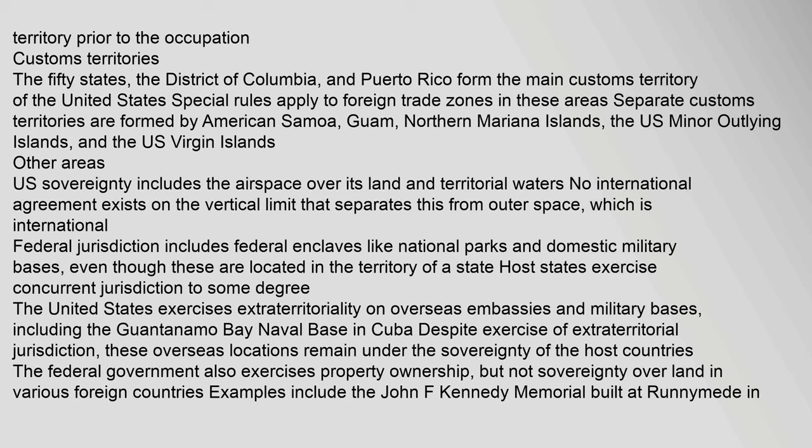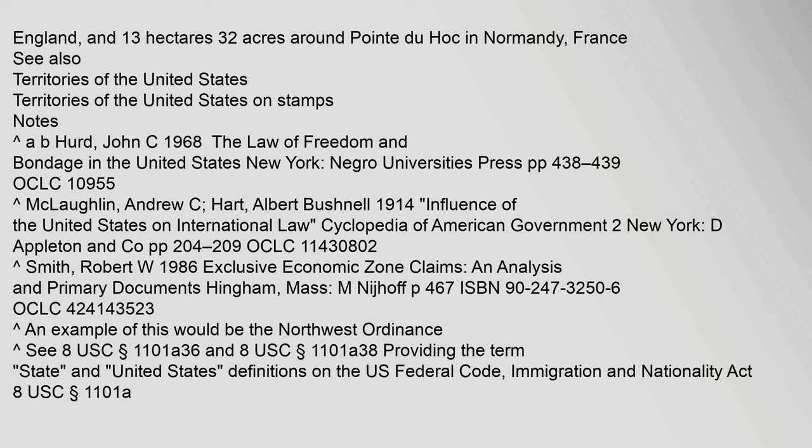U.S. sovereignty includes the airspace over its land and territorial waters. No international agreement exists on the vertical limit that separates this from outer space, which is international. Federal jurisdiction includes federal enclaves like national parks and domestic military bases, even though these are located in the territory of a state; host states exercise concurrent jurisdiction. The United States exercises extraterritoriality on overseas embassies and military bases, including the Guantanamo Bay Naval Base in Cuba. Despite exercise of extraterritorial jurisdiction, these overseas locations remain under the sovereignty of the host countries. The federal government also exercises property ownership — but not sovereignty — over land in various foreign countries, such as the John F. Kennedy Memorial at Runnymede in England, and 13 hectares around Pointe du Hoc in Normandy, France.